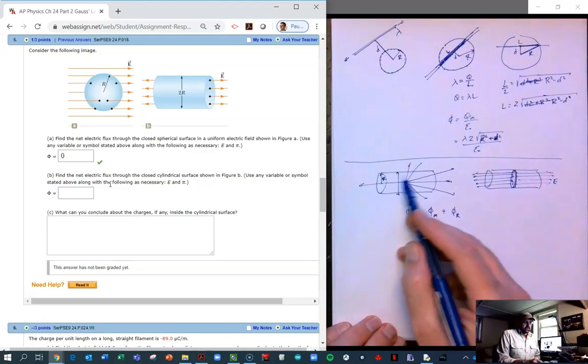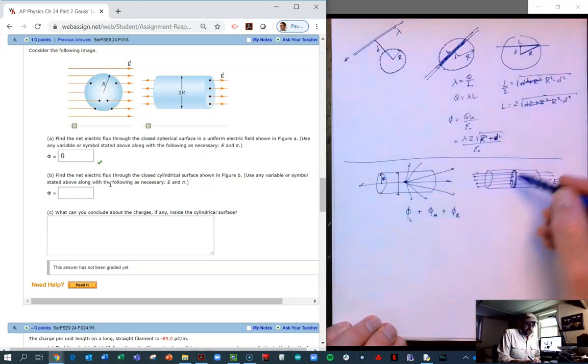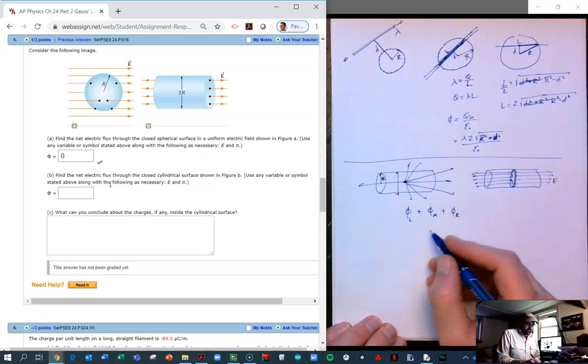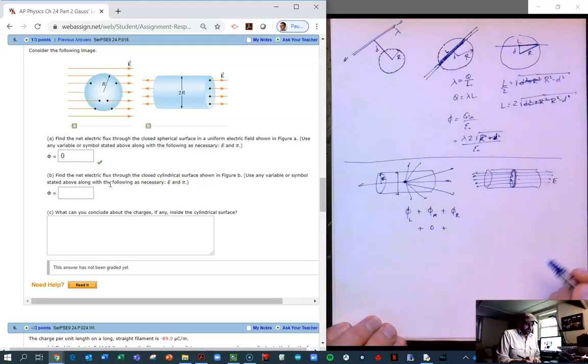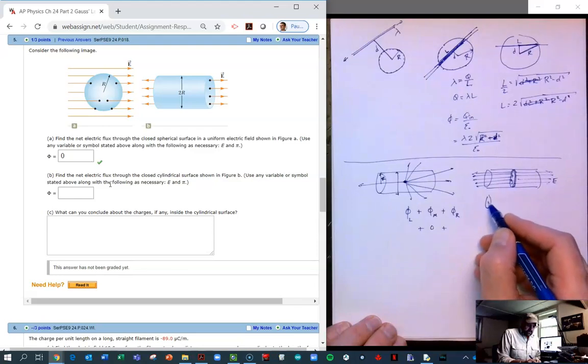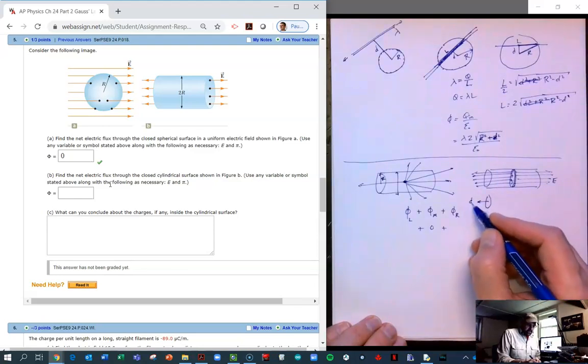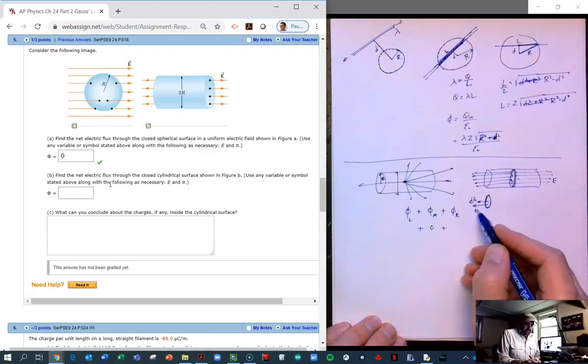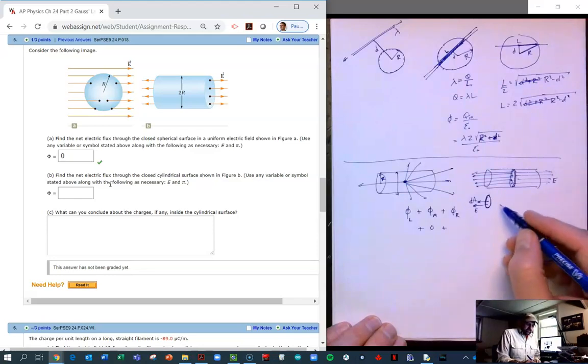And the flux through the middle part is pretty easy because there is no electric field going through the middle. It's only going through the ends, so this flux here is 0. The flux to the left, if we look at it carefully, the differential area or the area of our surface there is going to be pointing outward, it's going to be parallel to E.